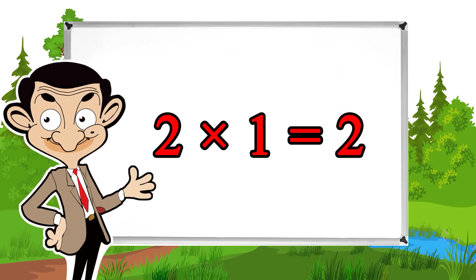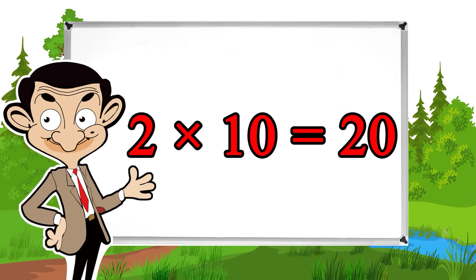2 times 1 equals 2, 2 times 2 equals 4, 2 times 3 equals 6, 2 times 4 equals 8, 2 times 5 equals 10, 2 times 6 equals 12, 2 times 7 equals 14, 2 times 8 equals 16, 2 times 9 equals 18, 2 times 10 equals 20.